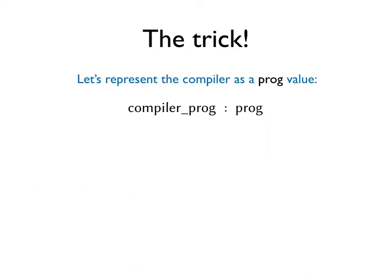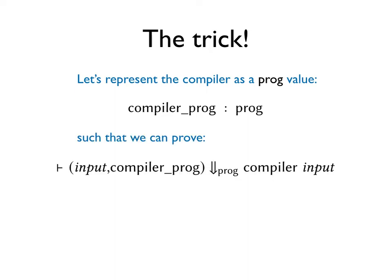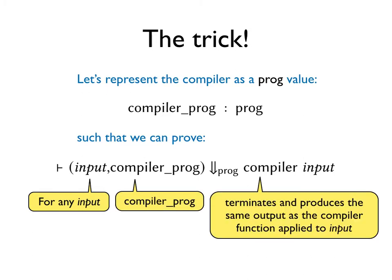So, how do we get around this? Well, there's a trick! Let's invent a PROG representation of the compiler. This PROG value, called compiler_PROG, needs to be such that the following holds. For any input, called INPUT, compiler_PROG will terminate and produce the same output as the compiler function applied to INPUT. One should view this theorem as the correctness of compiler_PROG. It relates compiler, the function, with compiler_PROG.